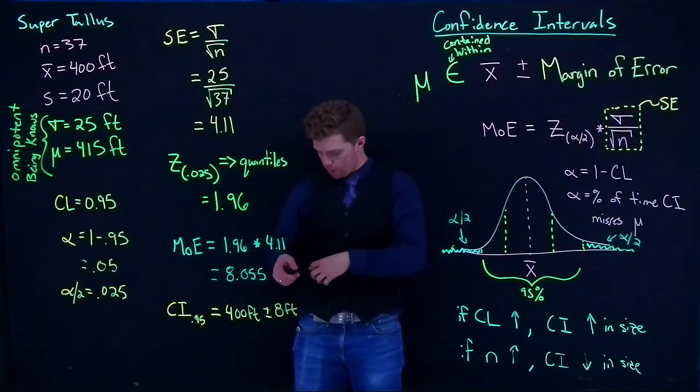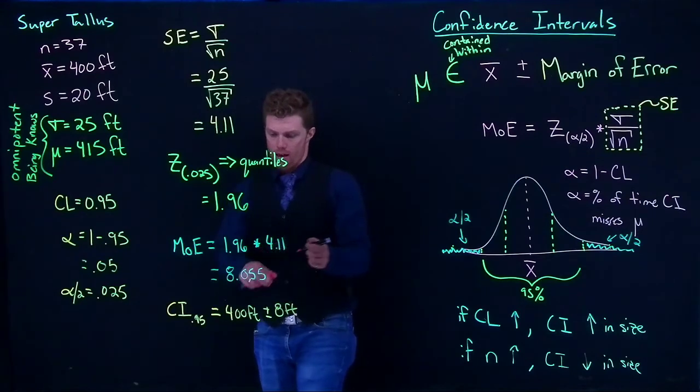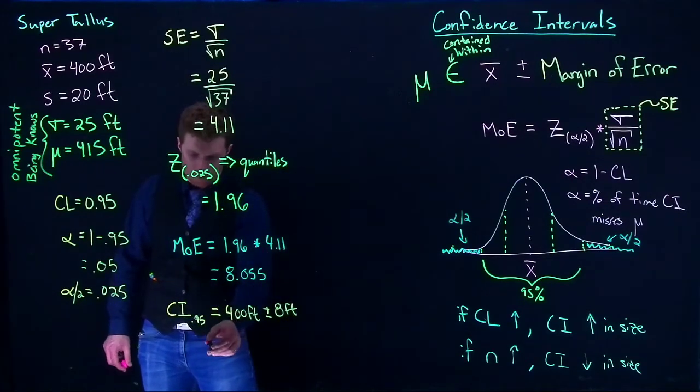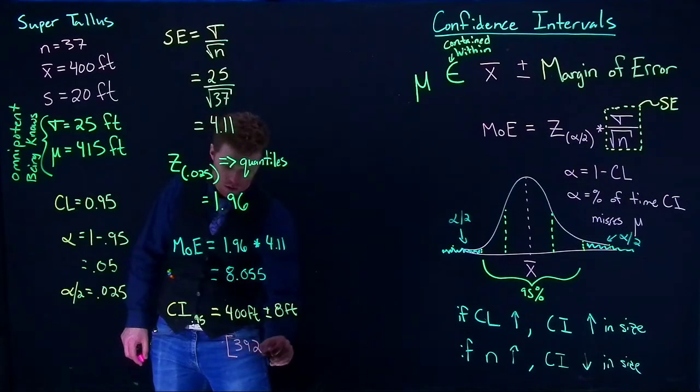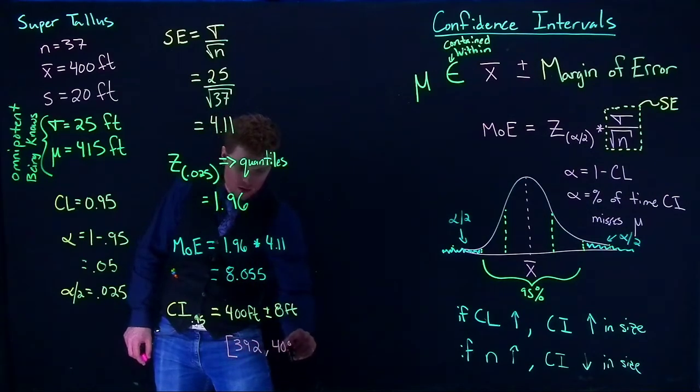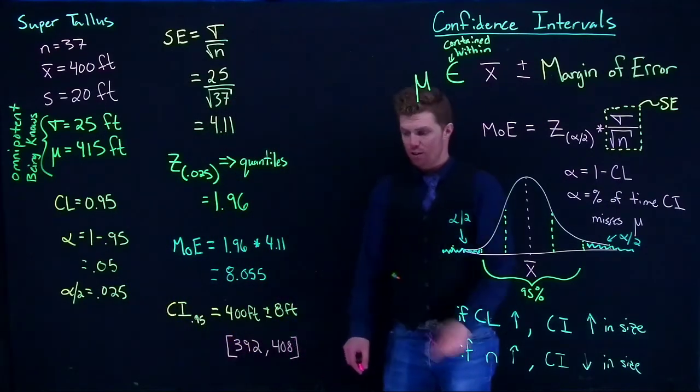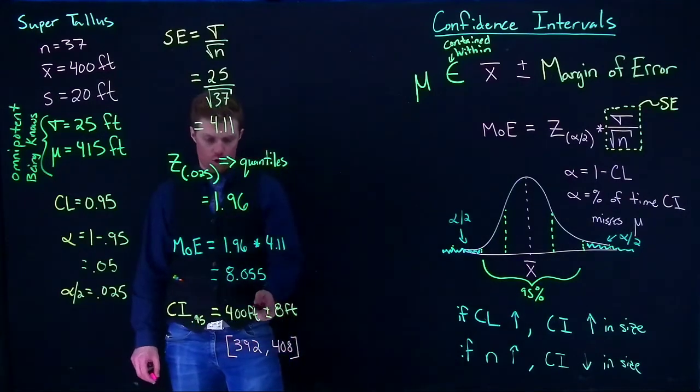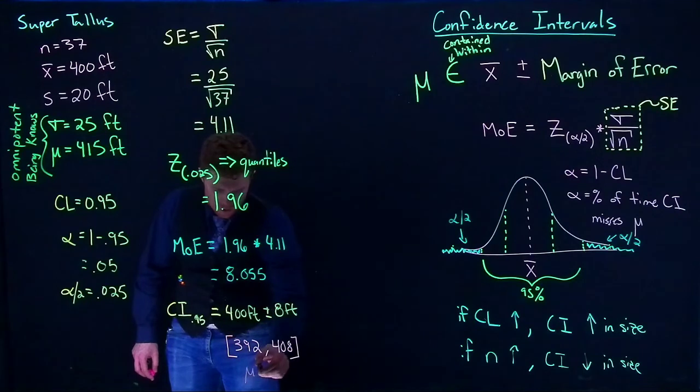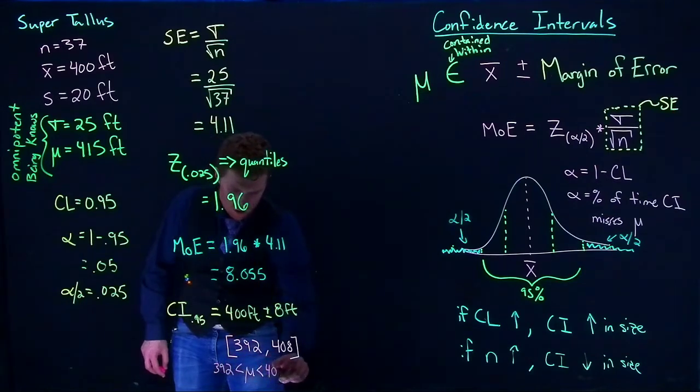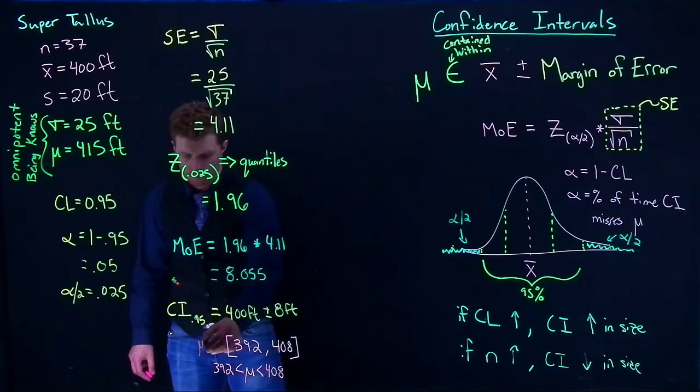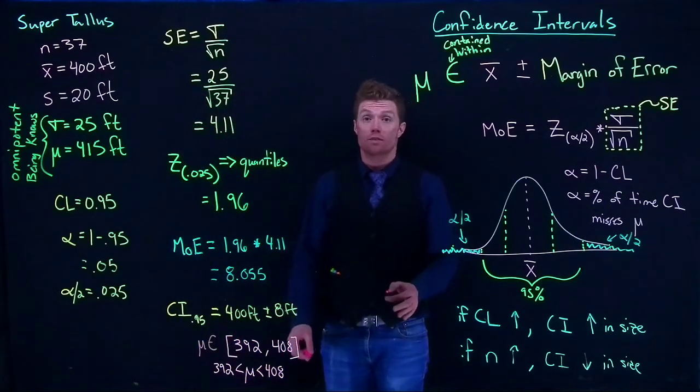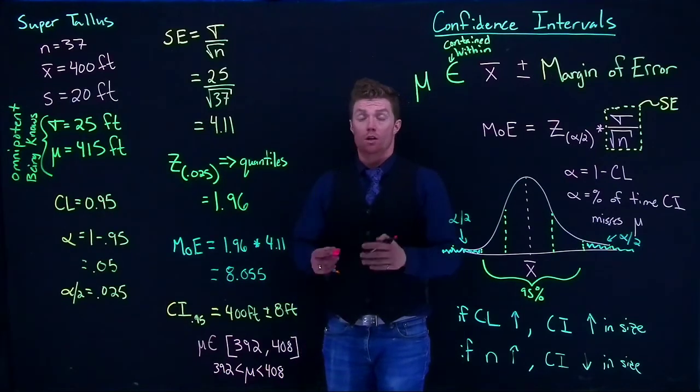So that's one way that we can write it. Another way that we could write this is that you'll see it sometimes written like this. Of our confidence interval is going to be 392 comma 408. So you'll see it written like that sometimes. Another way that you can see it written. Let's do just one more. We'll have mu like this and we'll have 392 and 408. And you'll have mu contained within. There's a whole bunch of different ways that you can write it. But ultimately it's the same information in each of these.